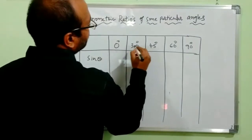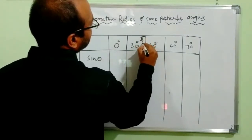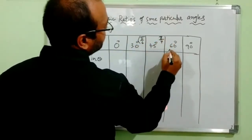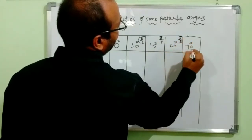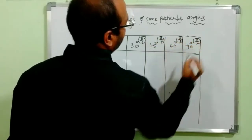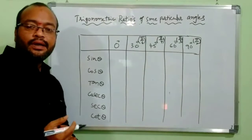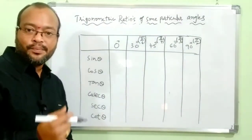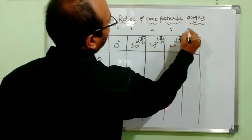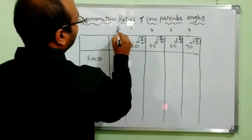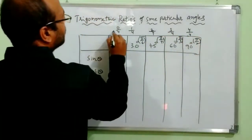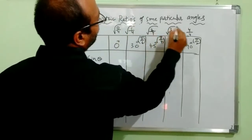For these values, I will give a trick to remember. First, write 0, 1, 2, 3, 4 and divide each by 4, then take the square root. So you get √(0/4), √(1/4), √(2/4), √(3/4), √(4/4). The 4s simplify, giving: root 0, root of 1/4, root of 2/4, root of 3/4, and root 1.